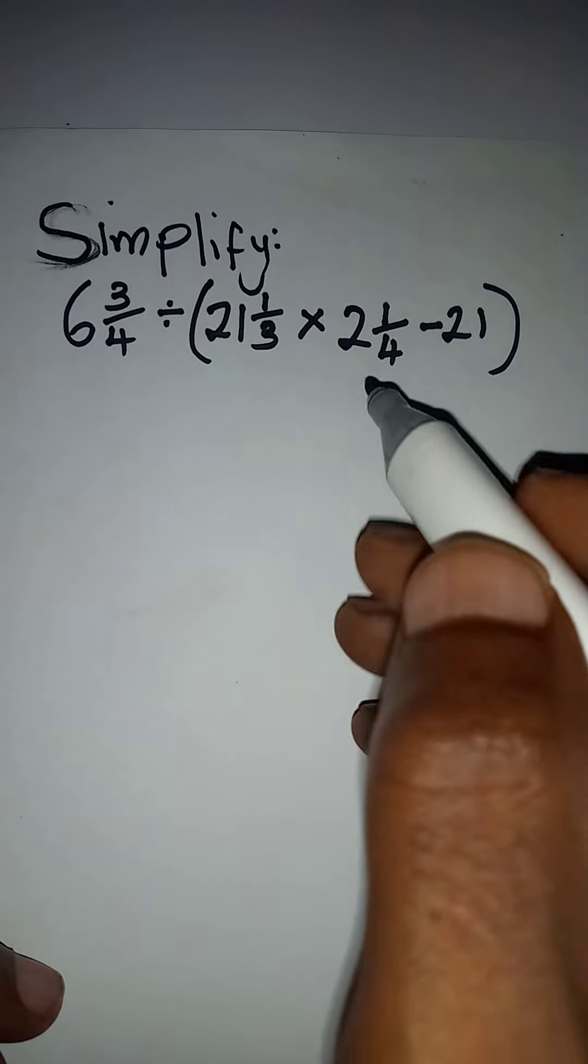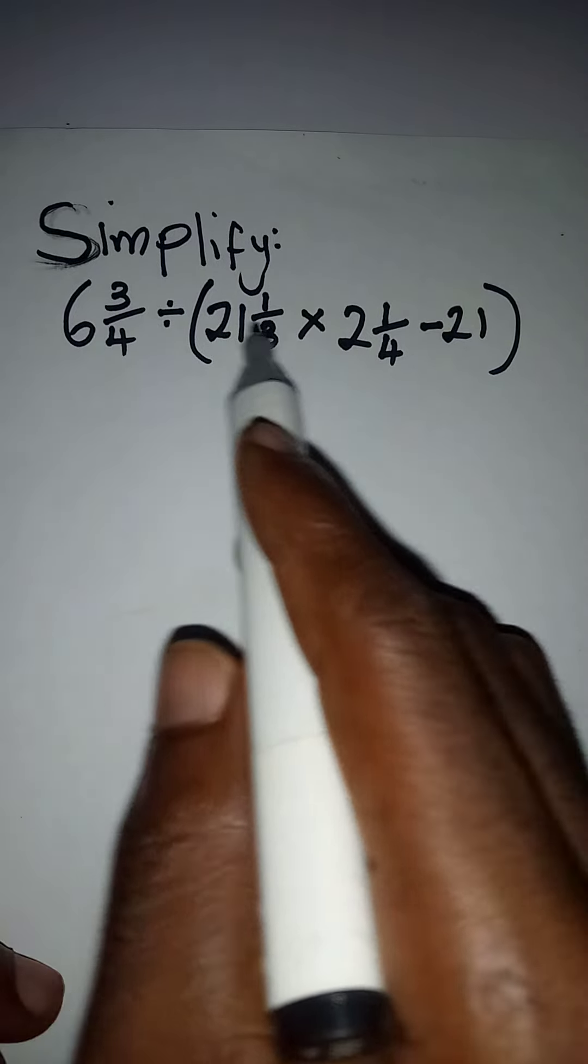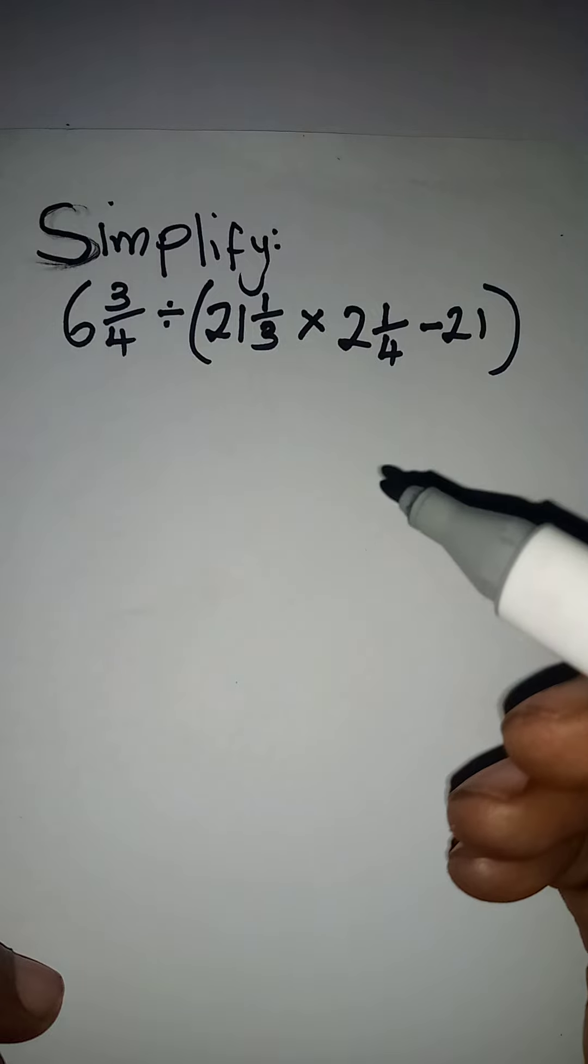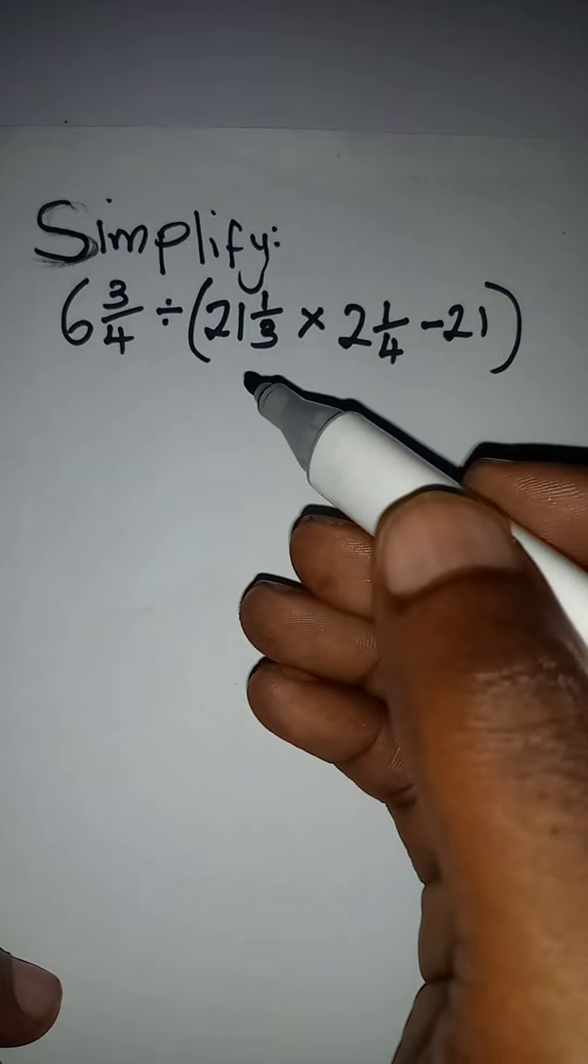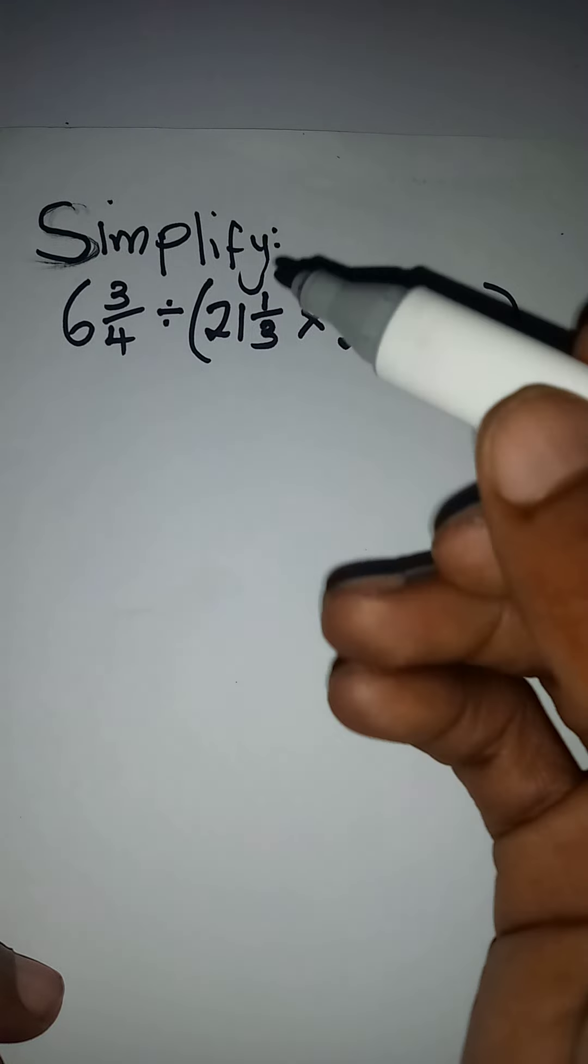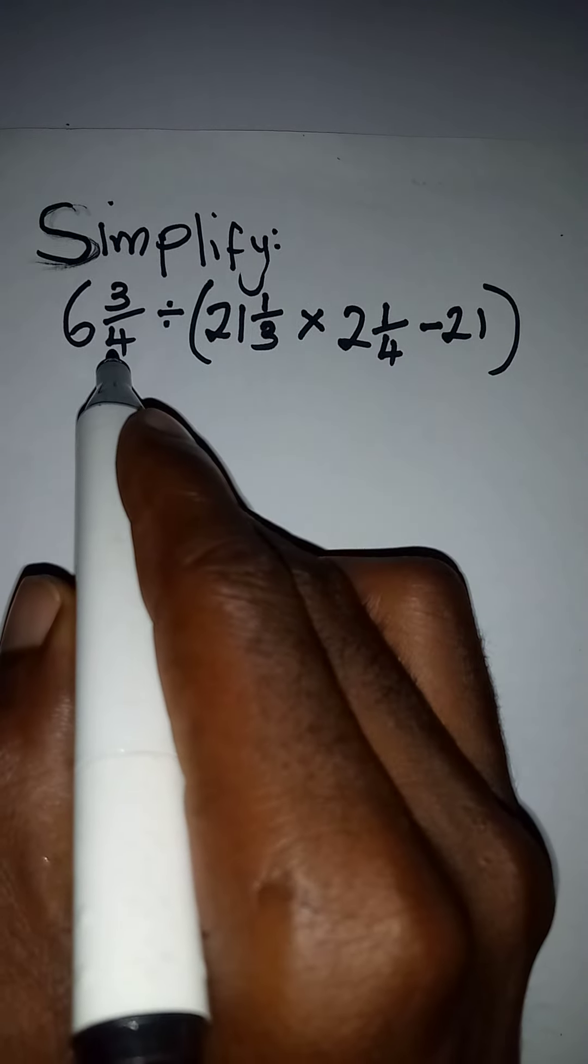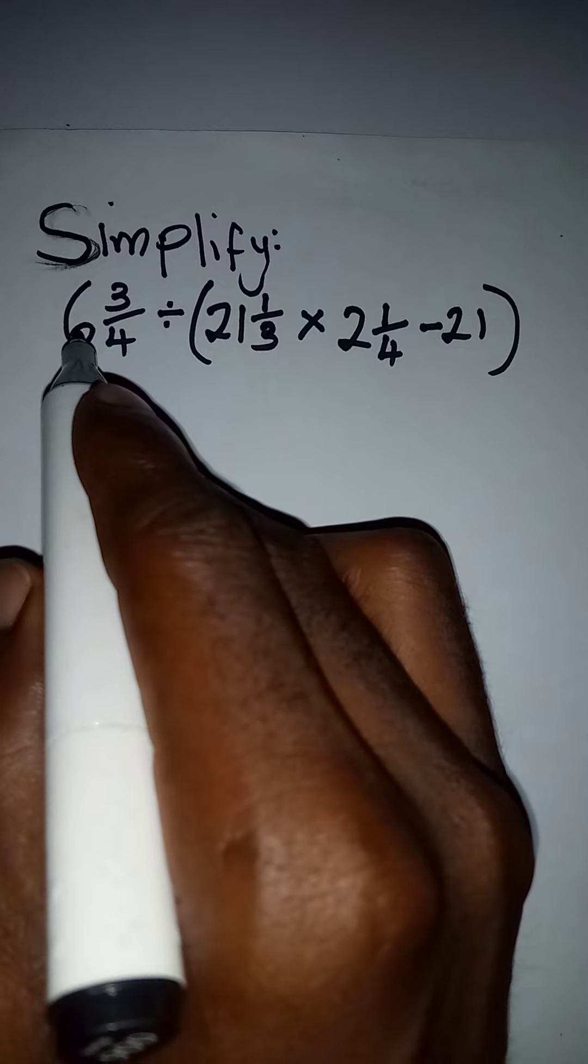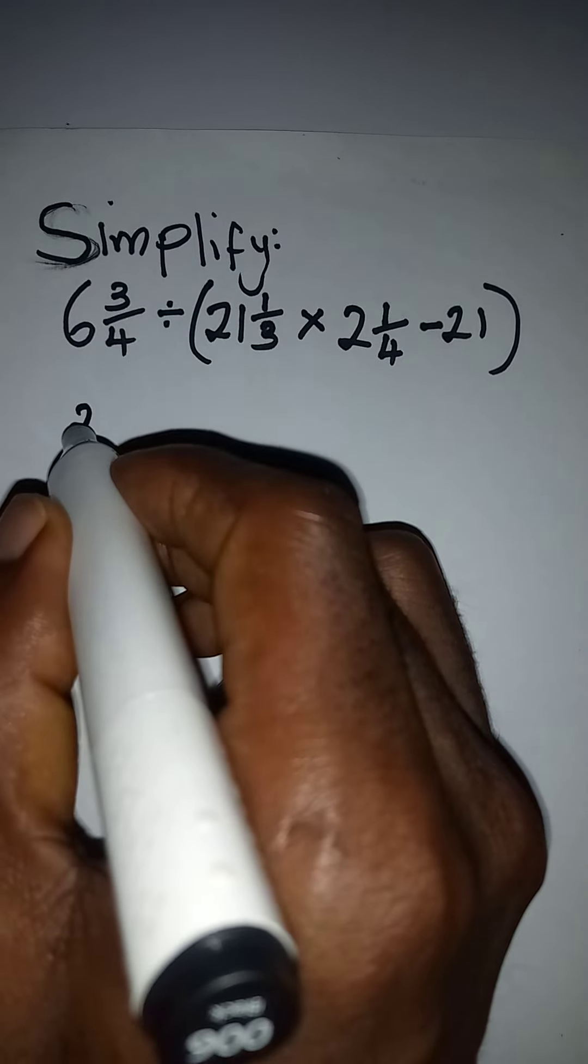Hello everyone, let's simplify this problem very quickly. The first thing I'm going to do is convert them from mixed form, so I'll multiply 4 by 6 to get 24, then plus 3. I will